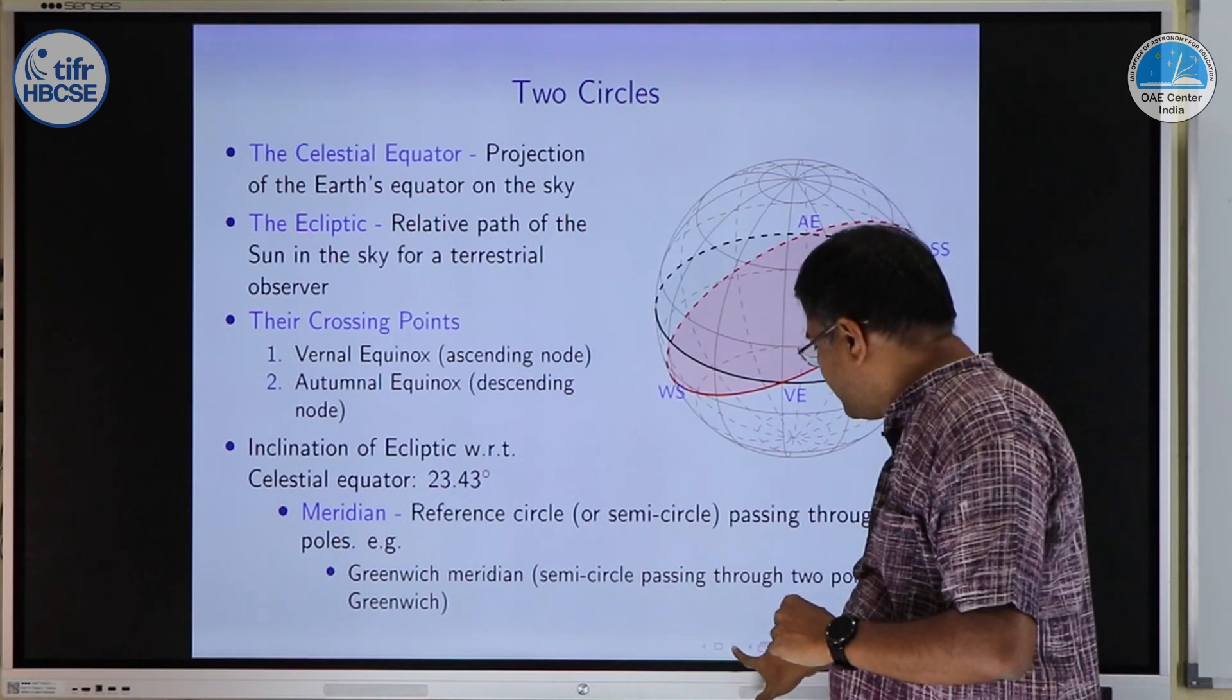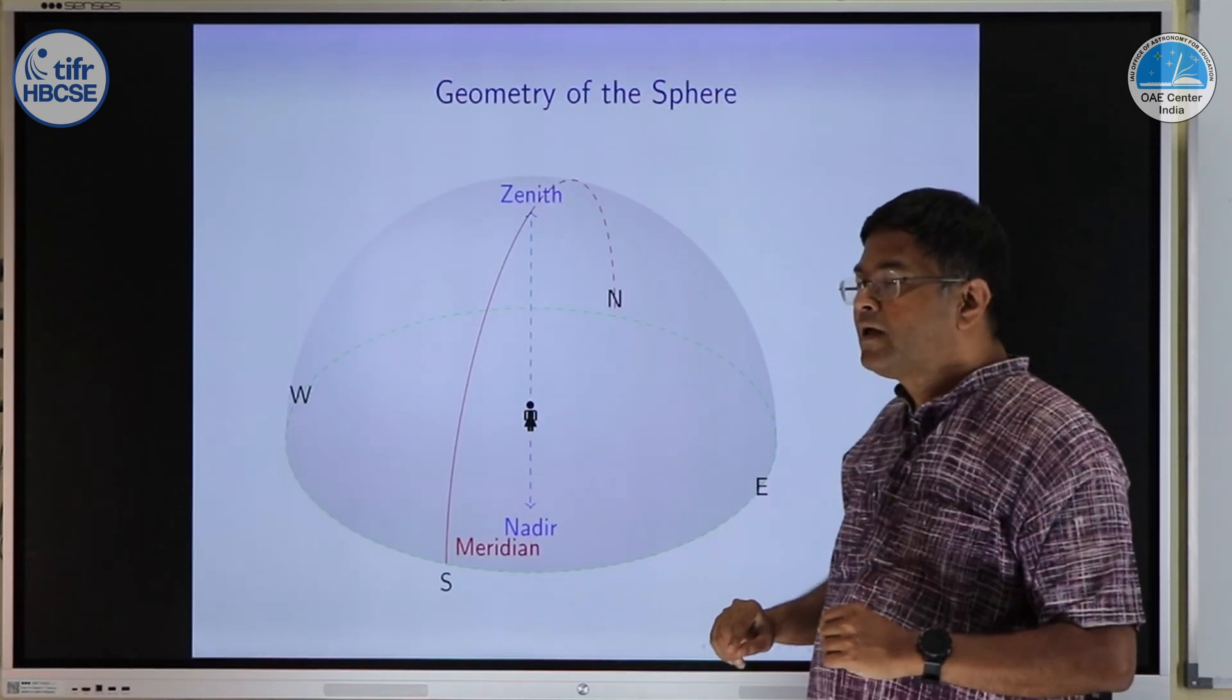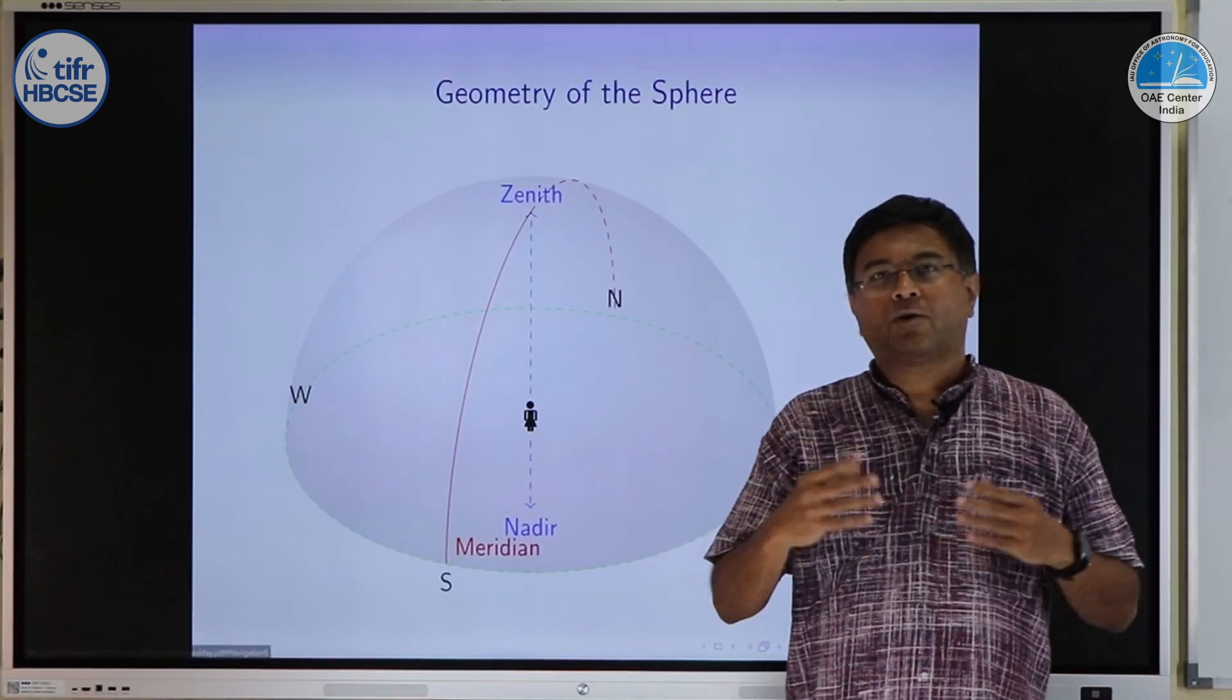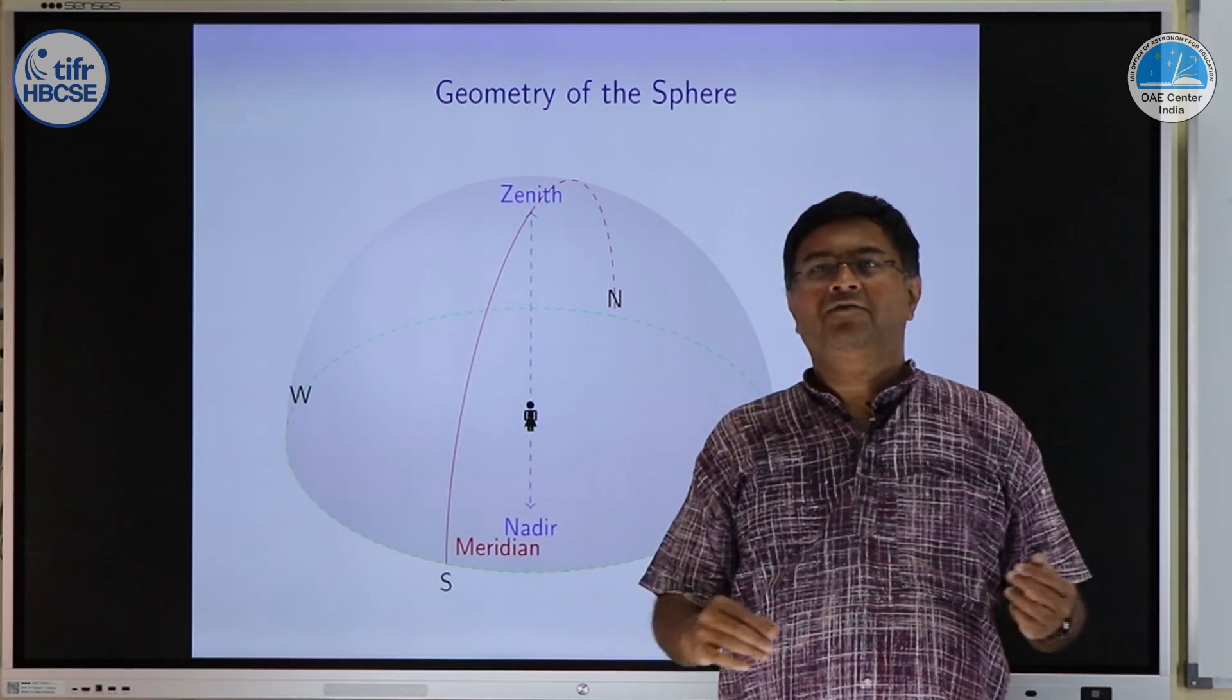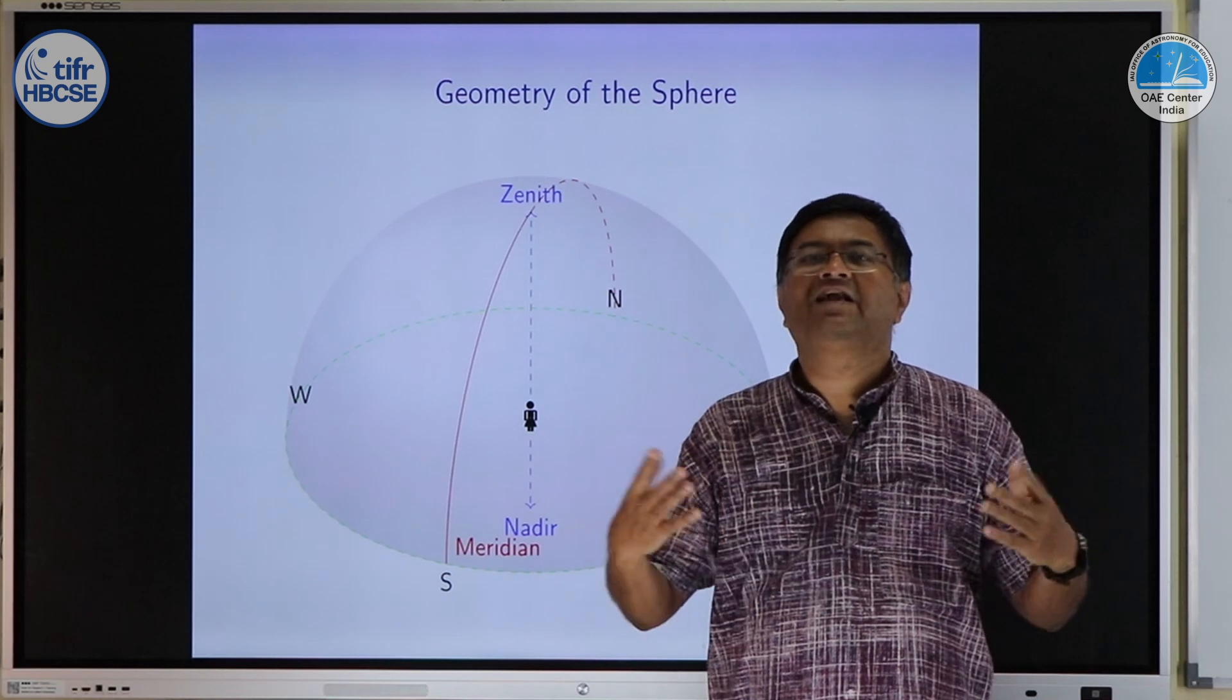Now, why do we need to define this meridian? Because for an observer on earth, when we are observing the sky, even for our local environment, we can define a meridian.